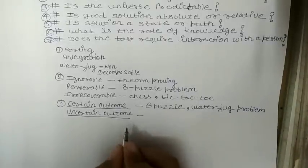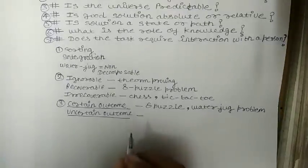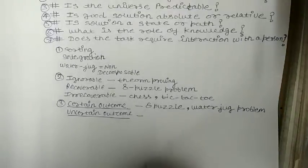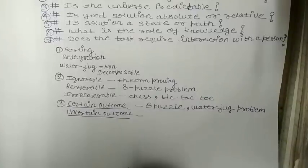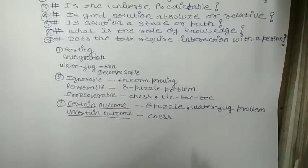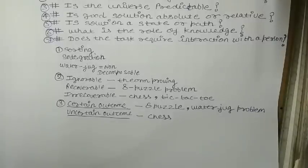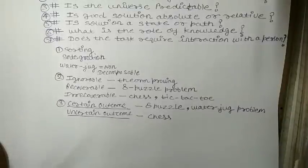For uncertain outcome problems, the outcome is not fixed. We don't know our destination or goal, and they are not predictable. The example is chess — we don't know who will win. We are dealing with an environment where two or more people are playing, and they don't know the outcome. So, this is the third characteristic.